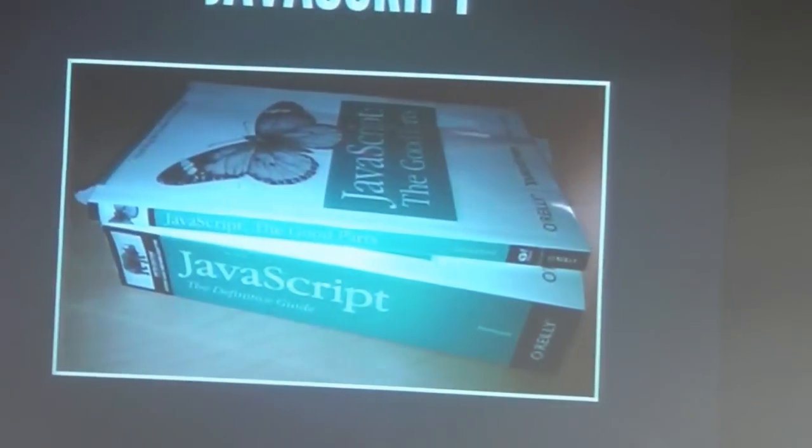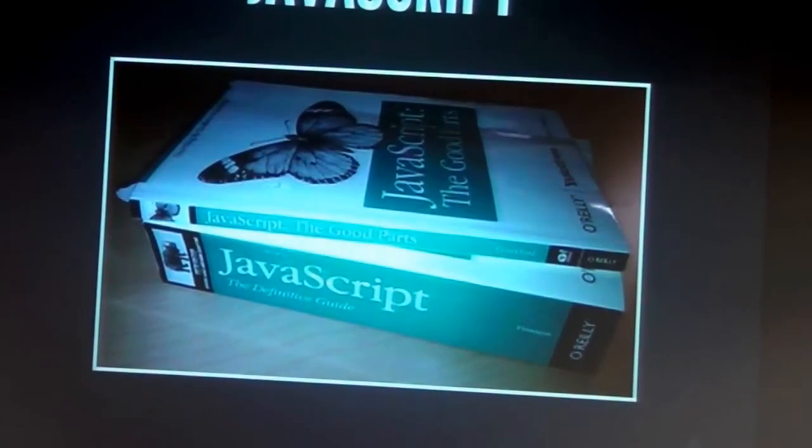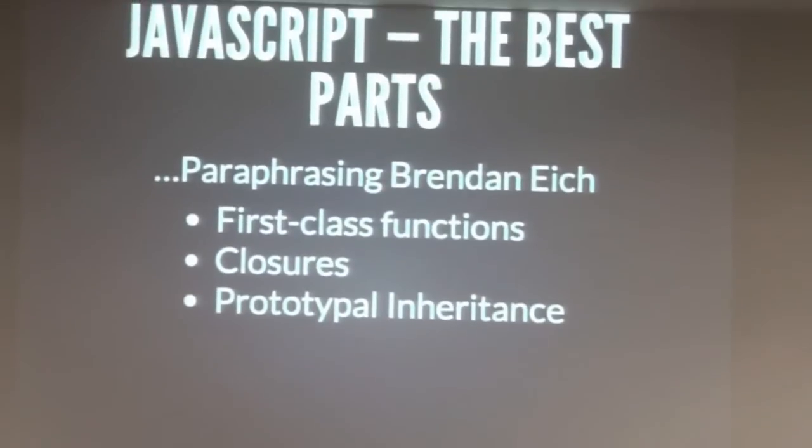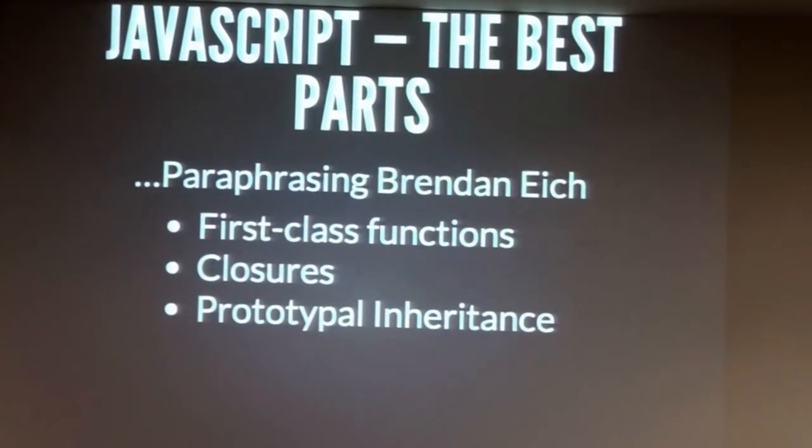There's this very popular photograph — JavaScript the Definitive Guide, which is the fat book at the bottom, and JavaScript the Good Parts, the thin one. JavaScript is not very cool. But fortunately there is Brendan Eich, who is our Messiah, the creator of JavaScript, and he has a very good sense of humor. At a recent talk he put up a slide as a joke to counter Douglas Crawford, listing JavaScript the Best Parts — basically three bullet points: functions as first-class objects, closures, and prototypal inheritance.